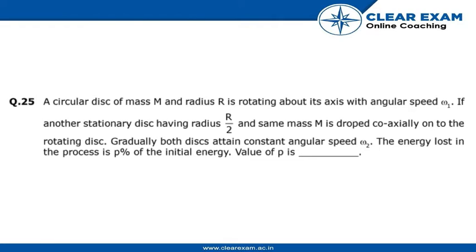If another stationary disk having radius R by 2 and same mass M is dropped coaxially onto the top of the rotating disk, gradually both disks attain constant angular speed omega 2. The energy lost in the process is p percent of the initial energy. We have to find out the value of p.